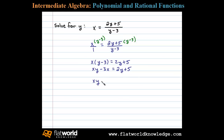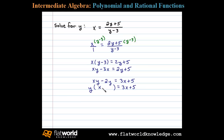So we get xy minus 2y equals 3x plus 5. You can see that by doing that, y becomes a GCF, so if we factor that out, we'll have y times x minus 2.